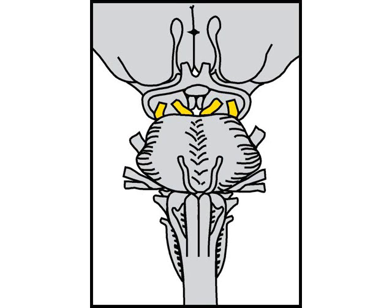Cranial nerve number three and four. The third nerve in particular can give important anatomical localization because it exits the midbrain just medial to the cerebral peduncles. So compression of this area by a mass would give a third nerve palsy plus a contralateral hemiparesis.